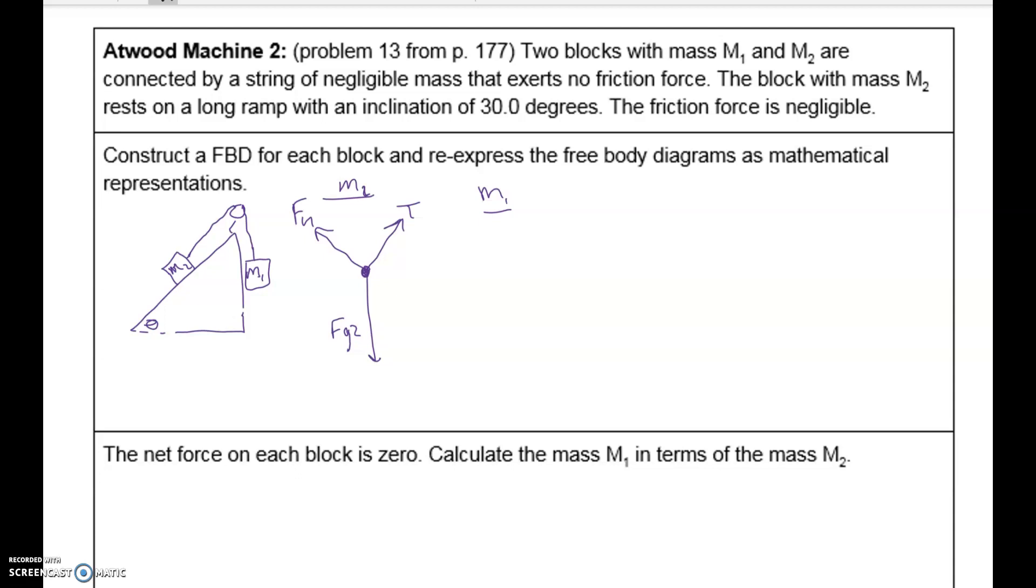Mass 1 has a simpler free body diagram because it is hanging from a rope. So for mass 2, we've got two forces going on. We've got force of tension upward, which is the same magnitude, so the same length as the arrow I drew for the other tension. Since it's the same rope over a massless, frictionless pulley, the tension force is the same magnitude. And then we have the force of gravity acting straight down. Force of gravity of object 1.